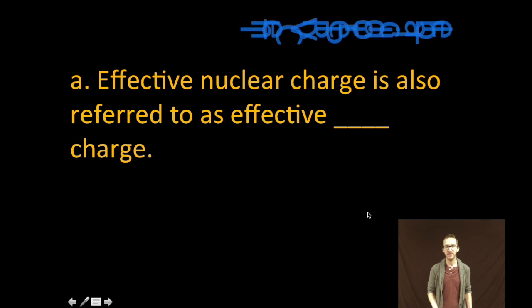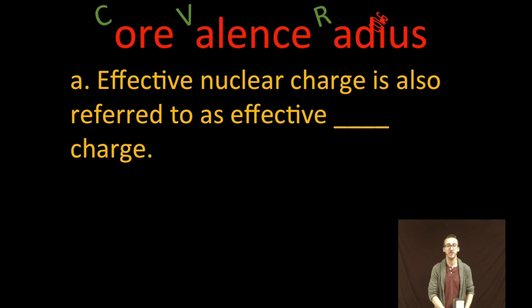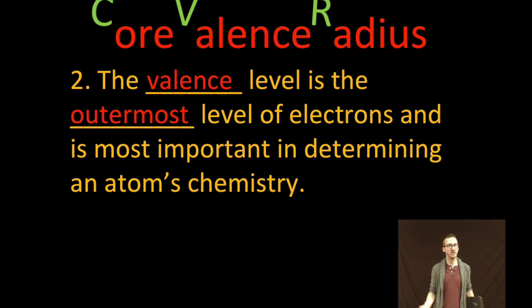Keep in mind that effective nuclear charge is also referred to, or also known as, effective core charge. The valence level is the outermost level of electrons and is most important in determining the atom's chemistry.